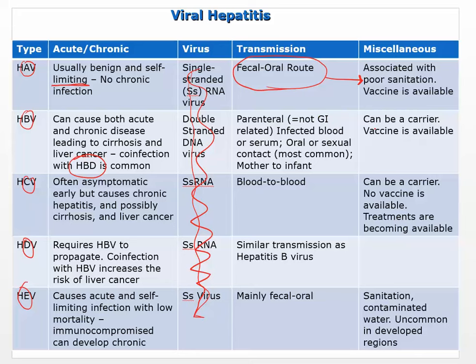Hepatitis C is often asymptomatic early but causes chronic hepatitis — that's a problem. Chronic hepatitis is strongly associated with hep C. Transmission is blood-to-blood, and no vaccine is available for this one.